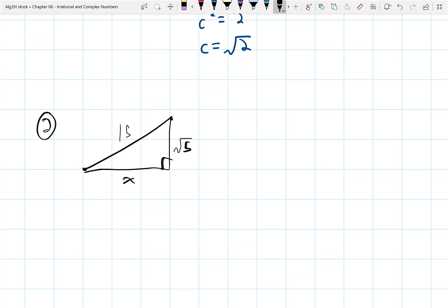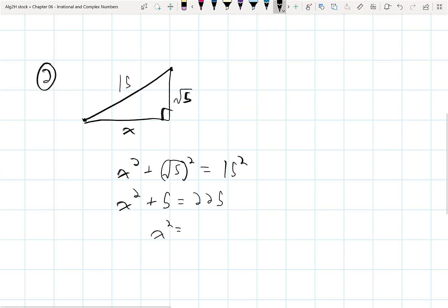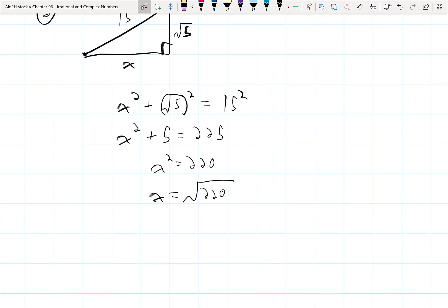I could use this same theorem and say that x squared plus root 5 squared is equal to 15 squared, which is going to be x squared plus 5 is equal to 225, or x squared is equal to 220, and x would be equal to the square root of 220, which if I simplify that by dividing through by a 4, 220 is equal to 4 times 55.